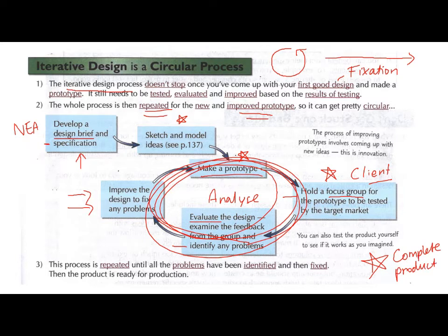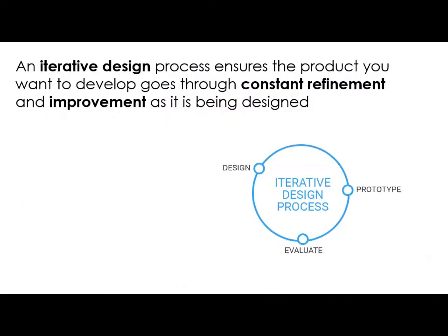There are lots of advantages to doing this in contrast to something that used to happen, which I'll talk about in a second. The process is repeated until all the problems with the prototype have been identified and fixed, and then the product would be ready to go into production — to actually be manufactured. So an iterative design process ensures the product you want to develop goes through this process of constant refinement and improvement. You go from design to prototype to evaluate, and then design again.